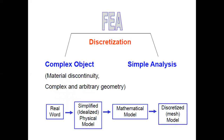FEA discretizes a complex object for simpler analysis. It divides complex objects — complex in geometry, material, and forces — into simpler parts. The forces applied on the geometry can be in the form of pressure, temperature, or external part weight.